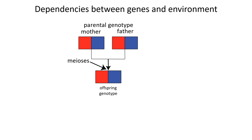The offspring genotype is determined by the genotype of the mother and the genotype of the father, and then the random segregation events that occur in the mother and father that determine which of the two copies of alleles are inherited. Given the genotype of the mother and the genotype of the father, all that remains to determine the offspring genotype is these random segregations, which are independent of the environment. What that means is that the offspring genotype is conditionally independent of the environment given the genotypes of the mother and the father.